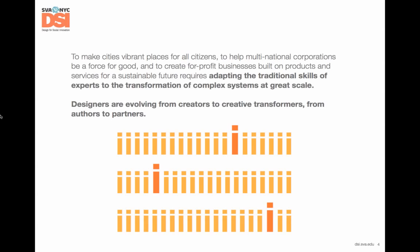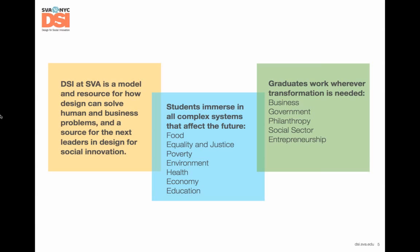At DSI, we've taken this philosophy and as a new MFA program that started in September 2012, we're a model and resource for how design can collectively solve human and business problems. We're training the next group of leaders in the design for social innovation movement by immersing students in complex systems that affect the future — food, environment, health — and creating systemic change. With this education, you can work in any sector: business, government, philanthropy, the social sector, or as entrepreneurs.